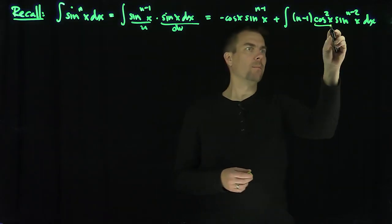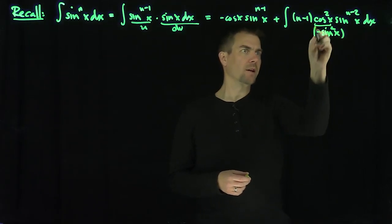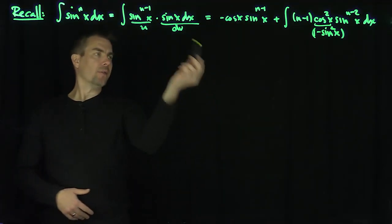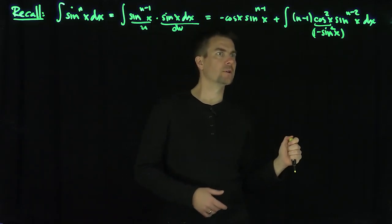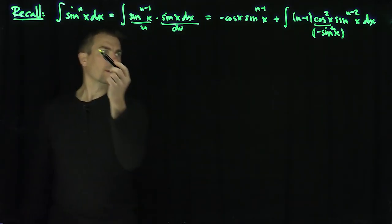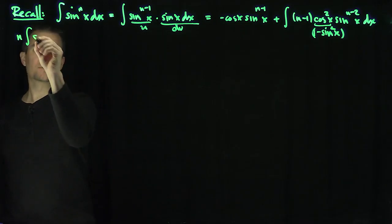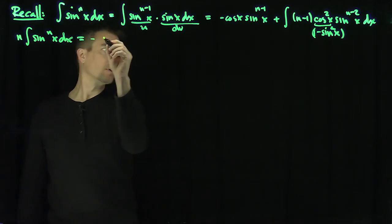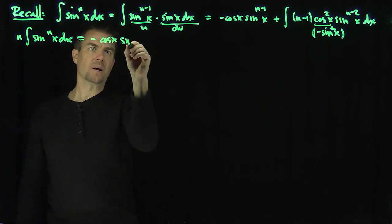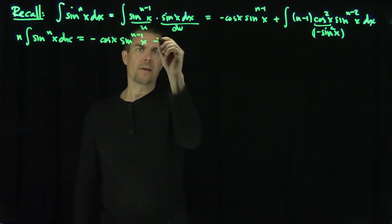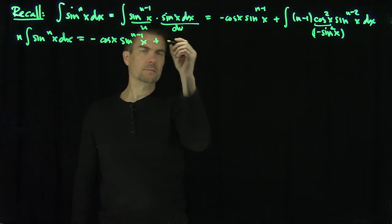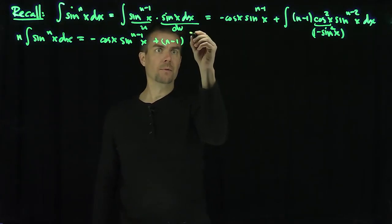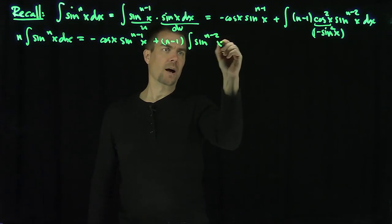Now the idea is that cos²(x) is really 1 − sin²(x), so I've self-replicated the formula. What we have is, if I throw the (n−1) term to the other side of the equation, we get: n times the integral of sinⁿ(x) dx equals negative cos(x) sinⁿ⁻¹(x), plus (n−1) times the integral of sinⁿ⁻²(x) dx.